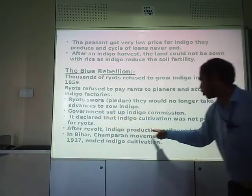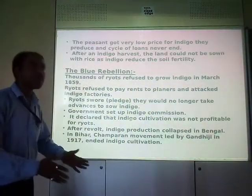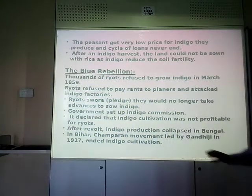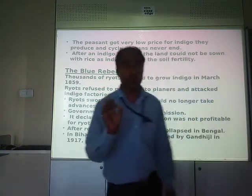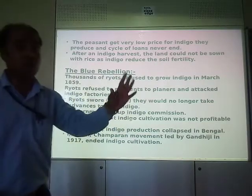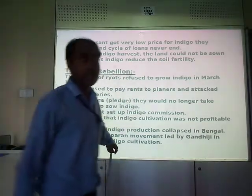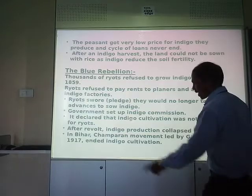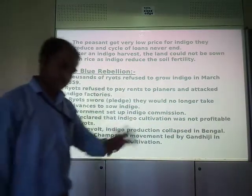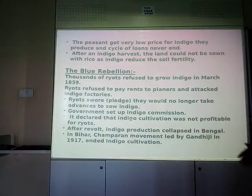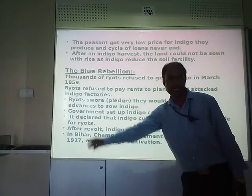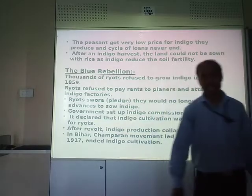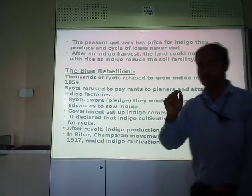The Indigo Commission declared that Indigo cultivation was not profitable for the Ryots — that's why they were revolting. Finally, after the revolt, Indigo production collapsed in Bengal. In Bihar also, the Champaran Movement led by Gandhiji in 1917 ended Indigo cultivation in the Champaran area, after fighting against the Indigo planters.